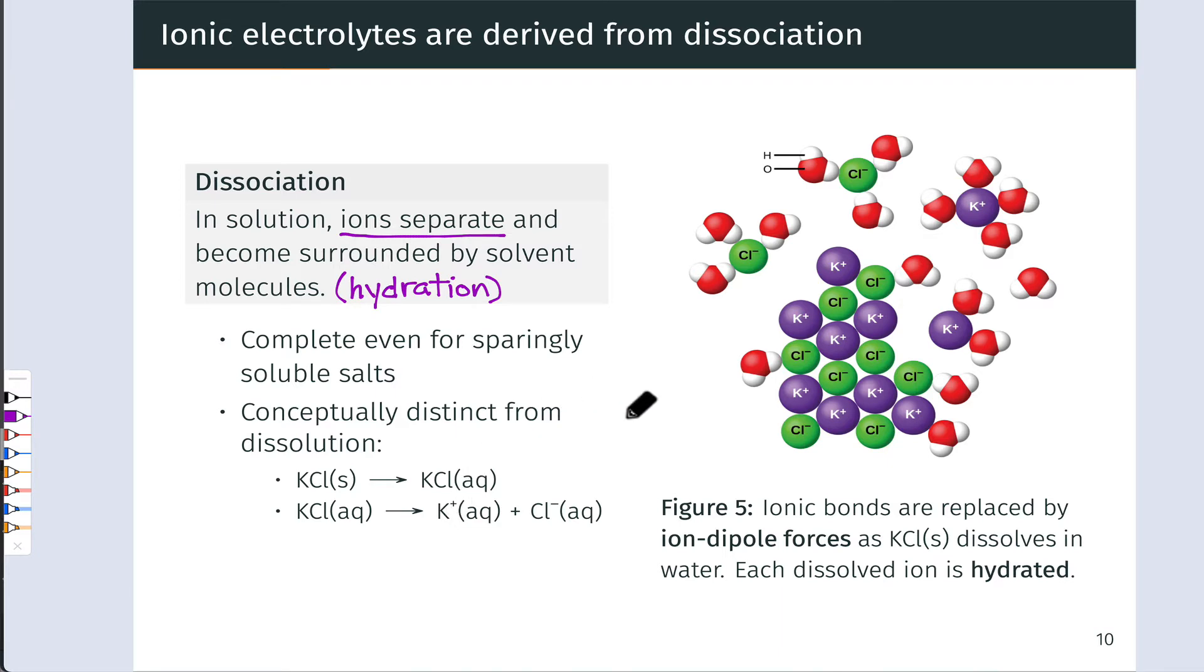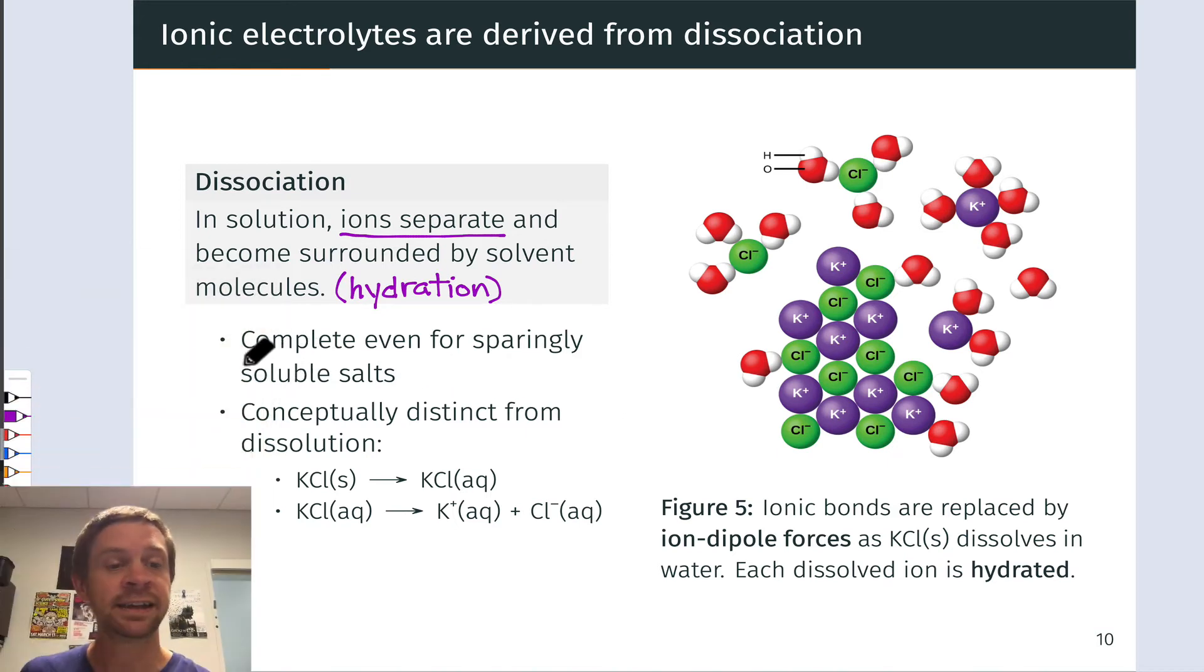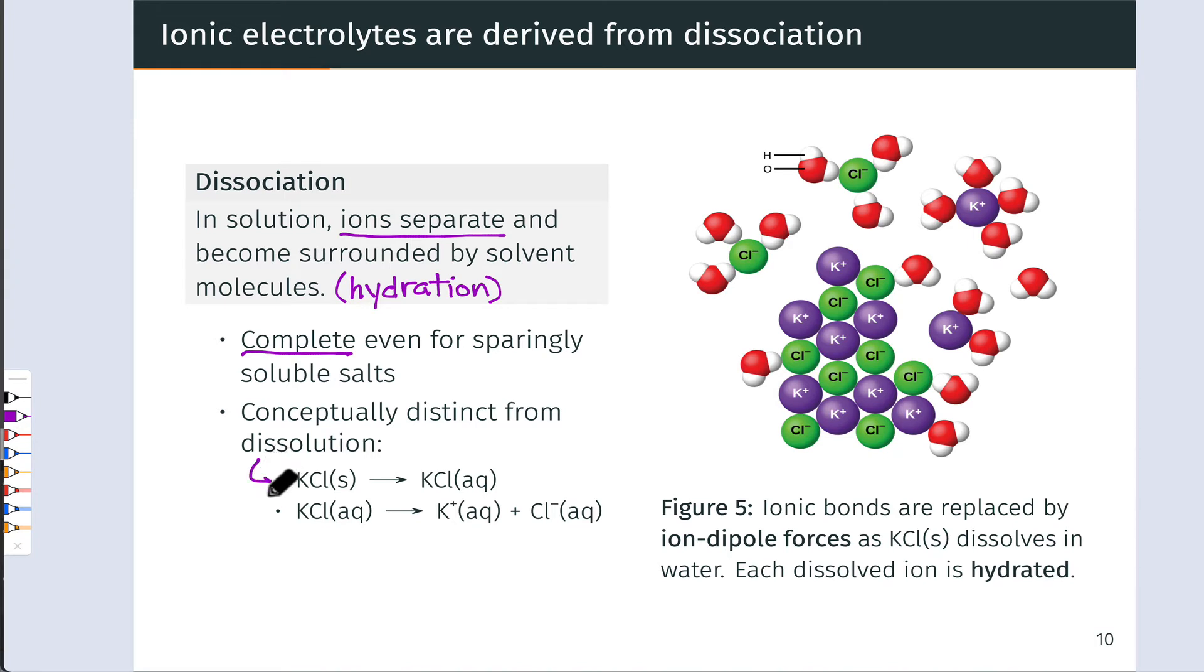For ionic salts containing, for example, a metal cation and some non-metal anion or polyatomic anion, dissociation is complete. And this is true even for sparingly soluble salts. So even if a small amount of solute actually dissolves in the solution, for any ionic salt, we can be sure that the dissolved components are fully dissociated, are in completely ionic form. And it's important to appreciate that dissociation is conceptually distinct from dissolution. The process of potassium chloride solid going into aqueous solution doesn't necessarily entail that the ions are separating. This is what we would call dissolution. Dissociation is this process of the dissolved KCl separating into aqueous K-plus and Cl-minus ions.